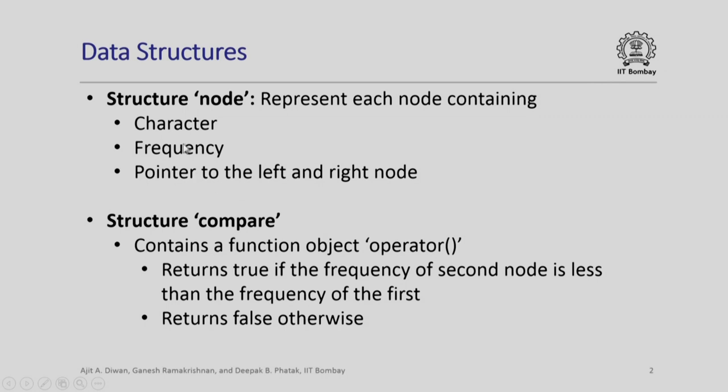In this structure the leaf node will actually have the character which is to be represented by some code. Now, since we want to impose an order on the nodes that they appear will require a function to compare two different values. There is a structure called compare which contains a function object.